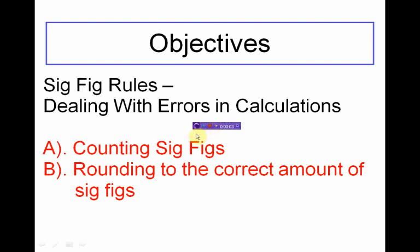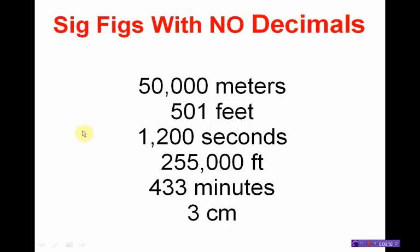Hi, this is Mr. Post. On today's session of Extra Help, we'll be learning how to count significant figures in measurements. We'll be looking at two sets of numbers: numbers with decimals and numbers without decimals. There are different rules for the different styles of numbers.